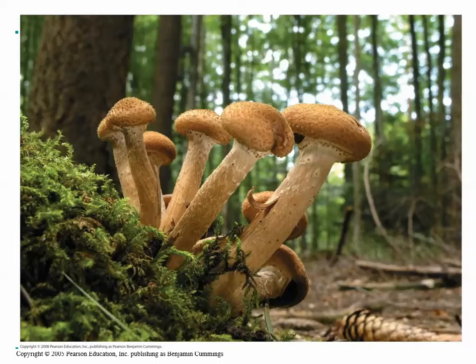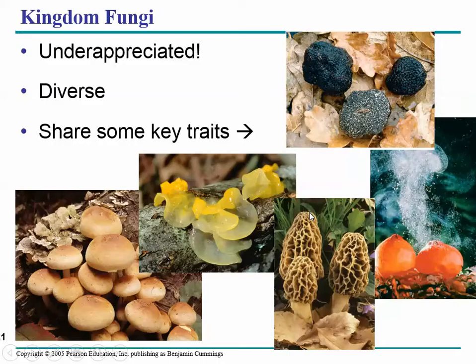Remember, fungi are all eukaryotic organisms, so their cells do have a nucleus. Kingdom fungi is very underappreciated and very diverse. Here are some really cool pictures of different fungi. These are morels, which are highly prized by mushroom hunters. These are puffballs — they release their spores, and if you give them a little gentle nudge, they puff and literally release a trillion spores at once.